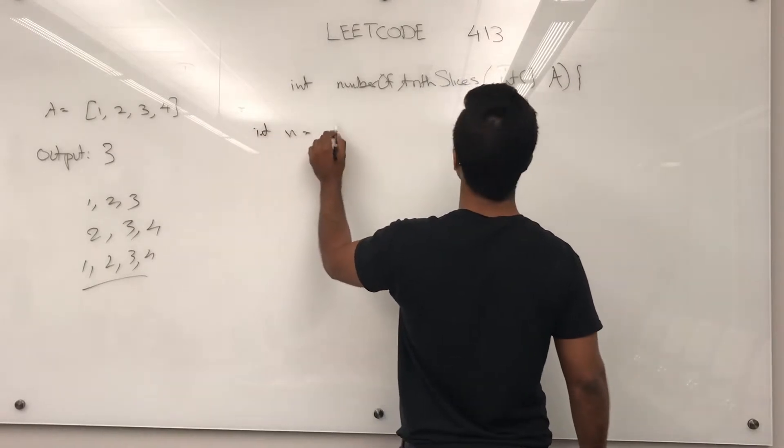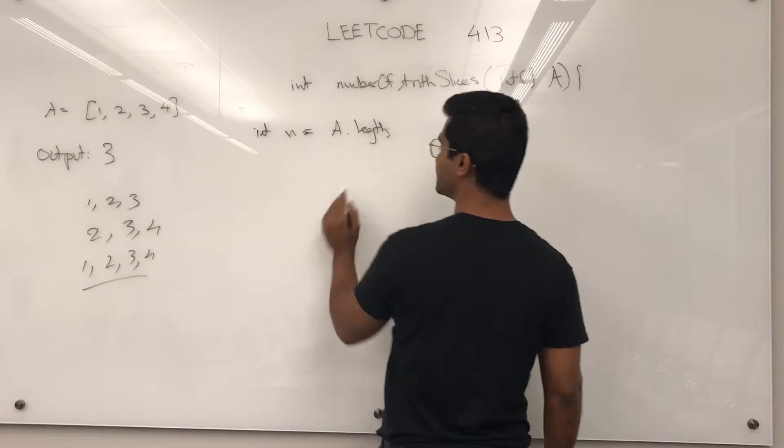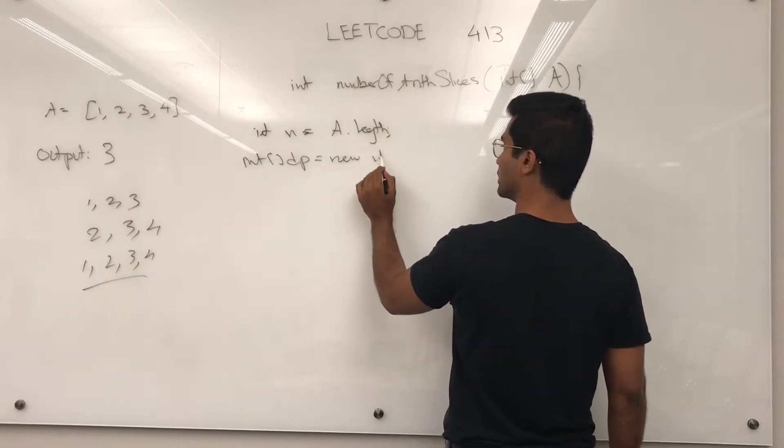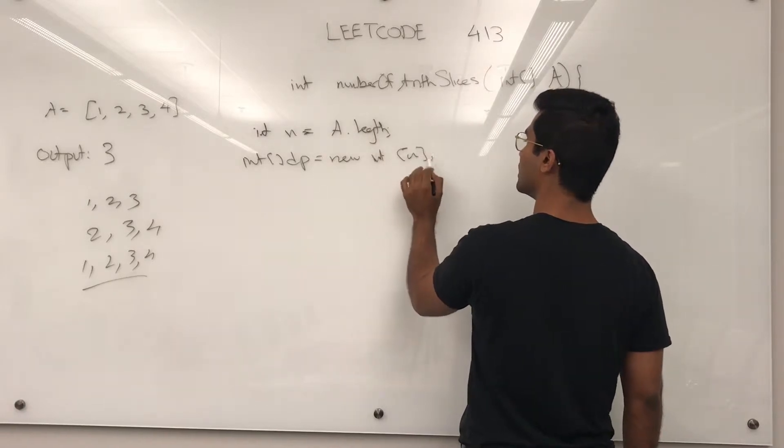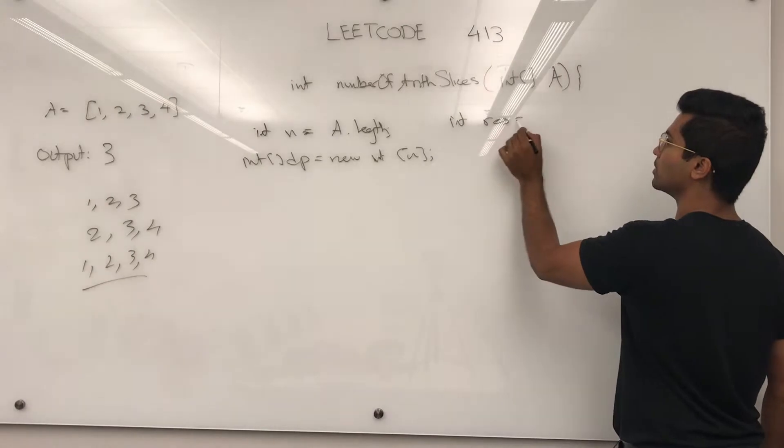So, let's start, int n is going to be a.length, let's initialize a DP array of new int n, and then since they want a result, we start at 0.